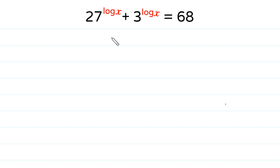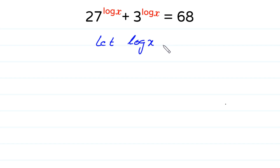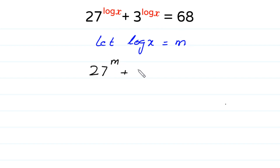First of all, we suppose that this power log of x is equal to m. Let log of x equal m. Then this equation becomes 27 to the power m plus 3 to the power m is equal to 68.